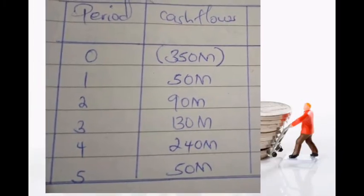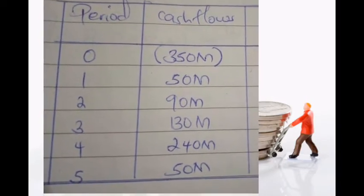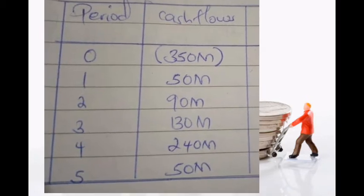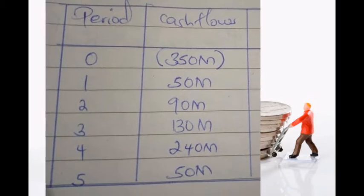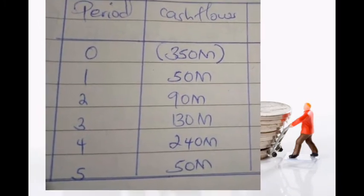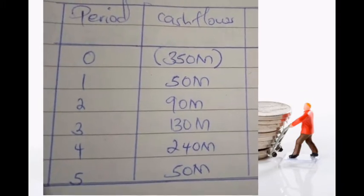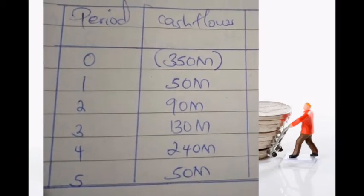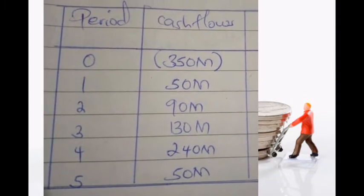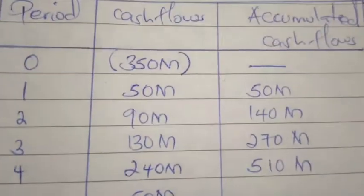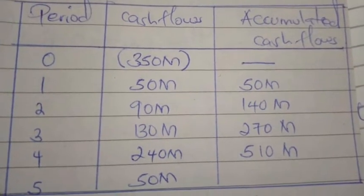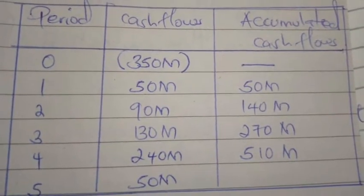To determine the payback period we shall draw a table with three columns. The first column is for the period from year zero to year five. The second column shows cash flows: year zero has the investment cost of 350 million; year one — 50 million; year two — 90 million; year three — 130 million; year four — 240 million; year five — 50 million. The third column is for accumulated cash flows, which we accumulate until we recover the 350 million invested.